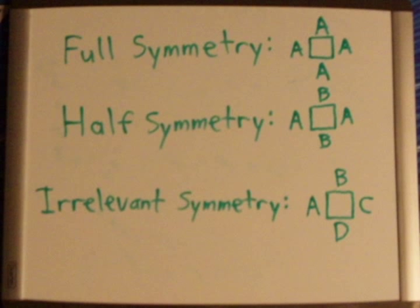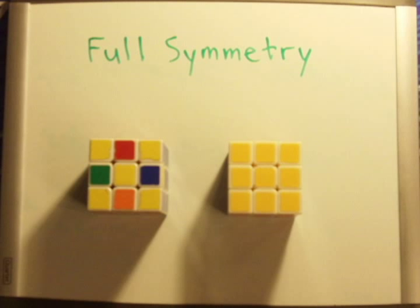For the purposes of this video, there will be three different types of symmetry that I will define for now. Full symmetry, half symmetry, and irrelevant symmetry. Any case that is the same from every angle is considered to have full symmetry. Any case that is only the same from two angles is said to have half symmetry. Lastly, any case that is different from all four angles falls into the irrelevant symmetry category. I will try to demonstrate to you through an easy example.